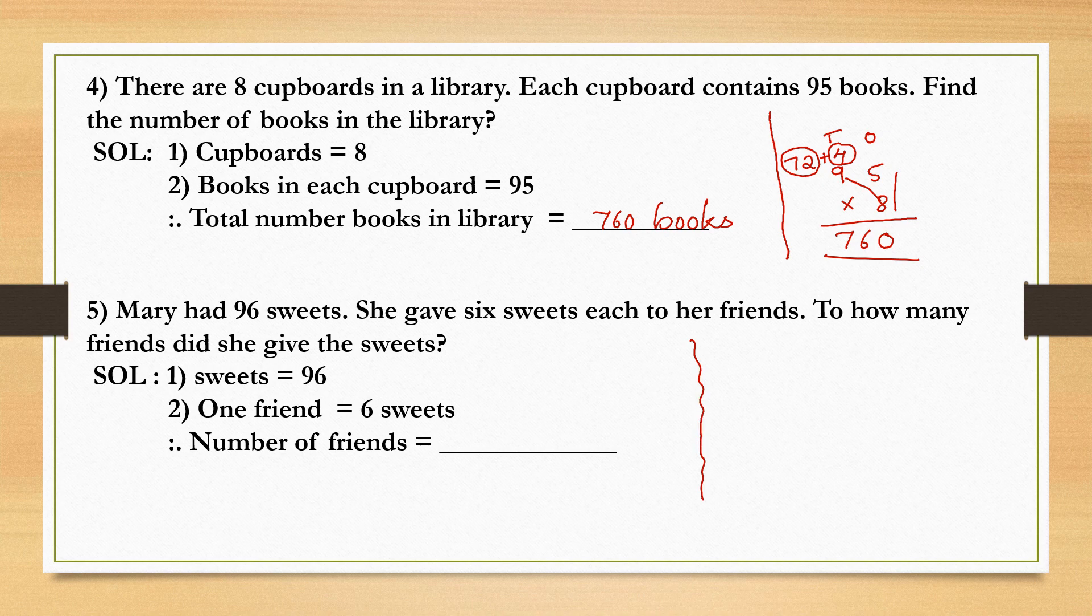Let's see how to solve the problem. What do you think, children? What do we need to do? Ninety-six sweets are there. She gives one friend six sweets. We should find number of friends. So we need to divide here. Ninety-six divided by six.